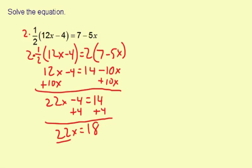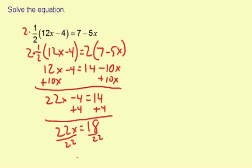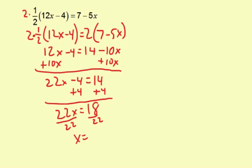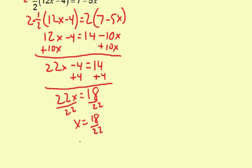The last step is going to be to divide by 22. It's going to give x equals 18 divided by 22. Now it looks like these can be reduced a little bit because they're both even numbers, so it means a 2 can go in. If I take out a 2 from both, it's going to be x equals 9 elevenths.